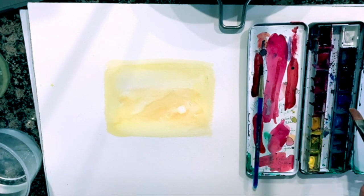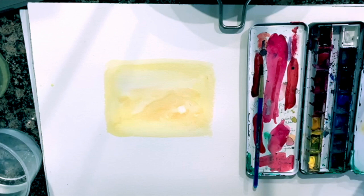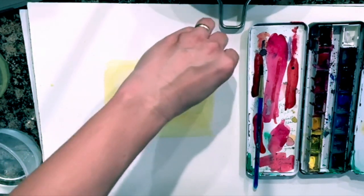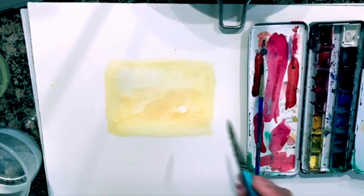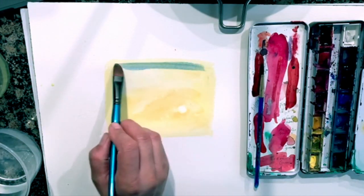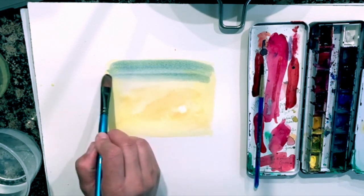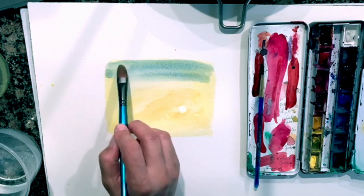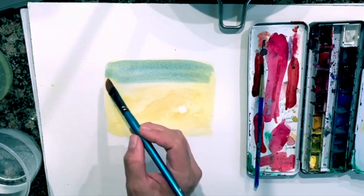Now we're going to grab some blue and paint the top of the sky. And what I'm doing here is just dabbing the excess color so it doesn't, so it's dry and that the color stays blue and doesn't turn green. So that's what we're doing right now. So we're adding blue to the top.